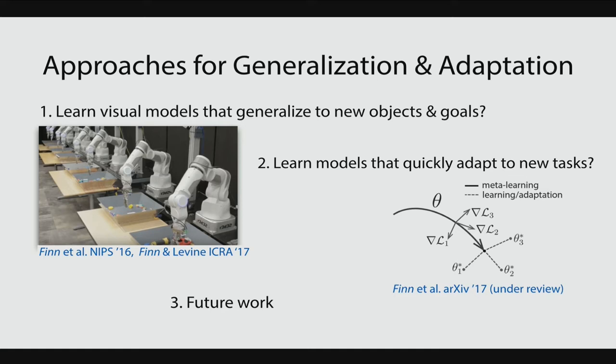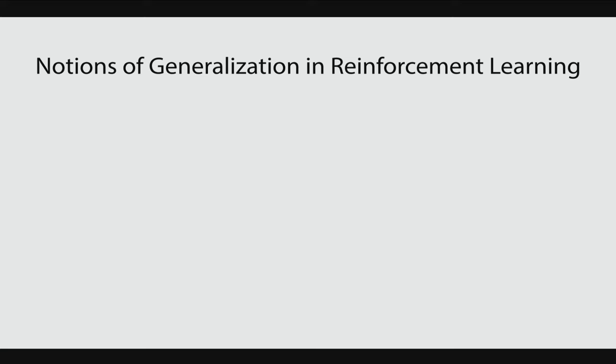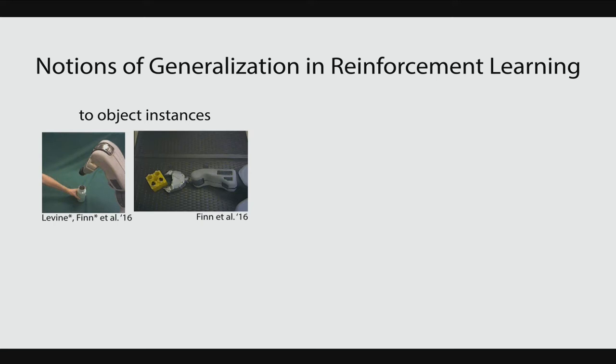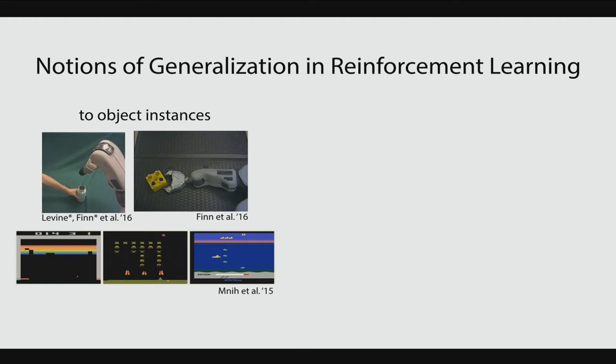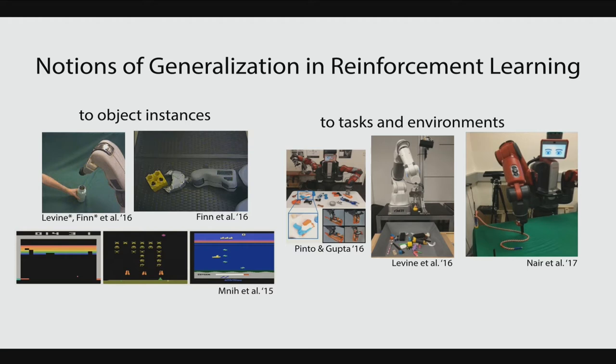What do I mean by generalization in reinforcement learning in robotics? First, I mean generalization to object instances. The robot learned how to screw that specific cap onto that specific bottle. Similarly in Atari, if you change the objects in the environment, the policy won't generalize. And second, I mean generalization to tasks and environments. There's been work on scaling up robot learning to many different objects so you can generalize to objects you haven't seen before.